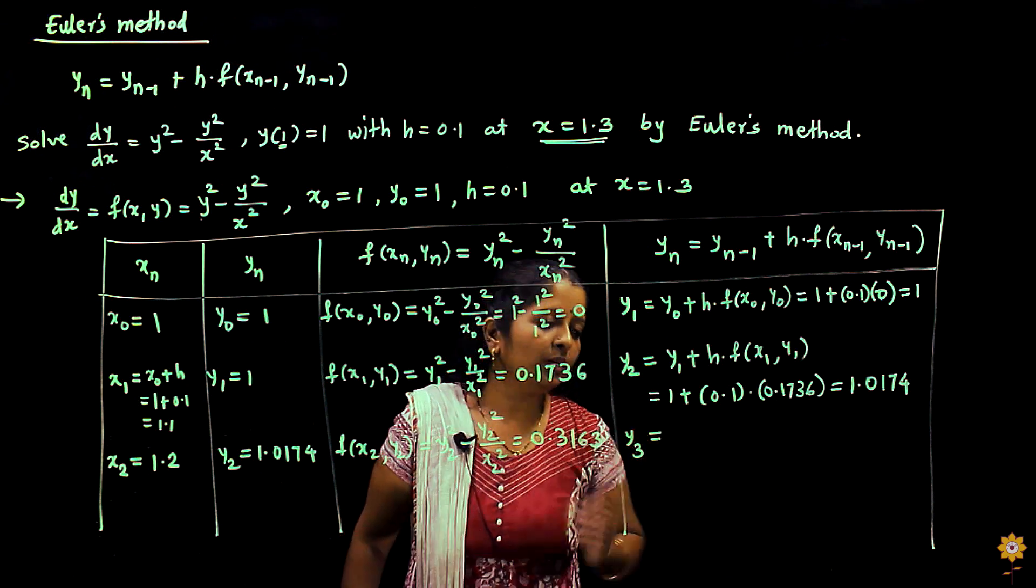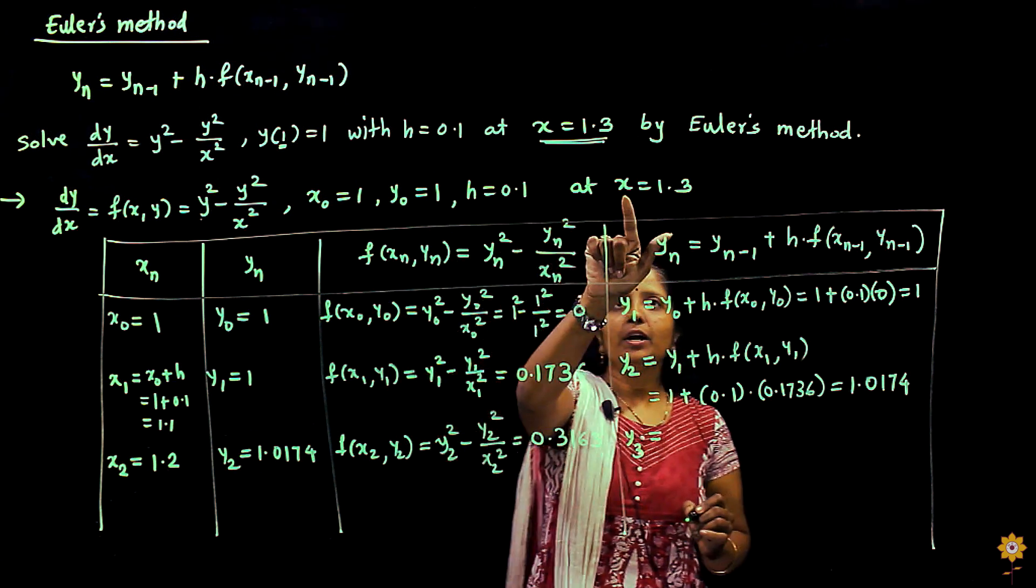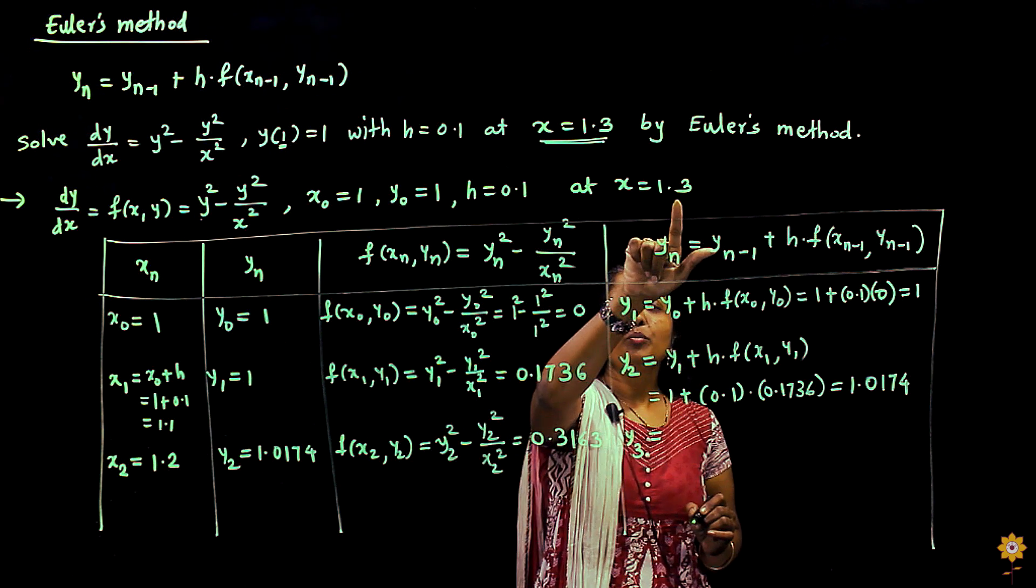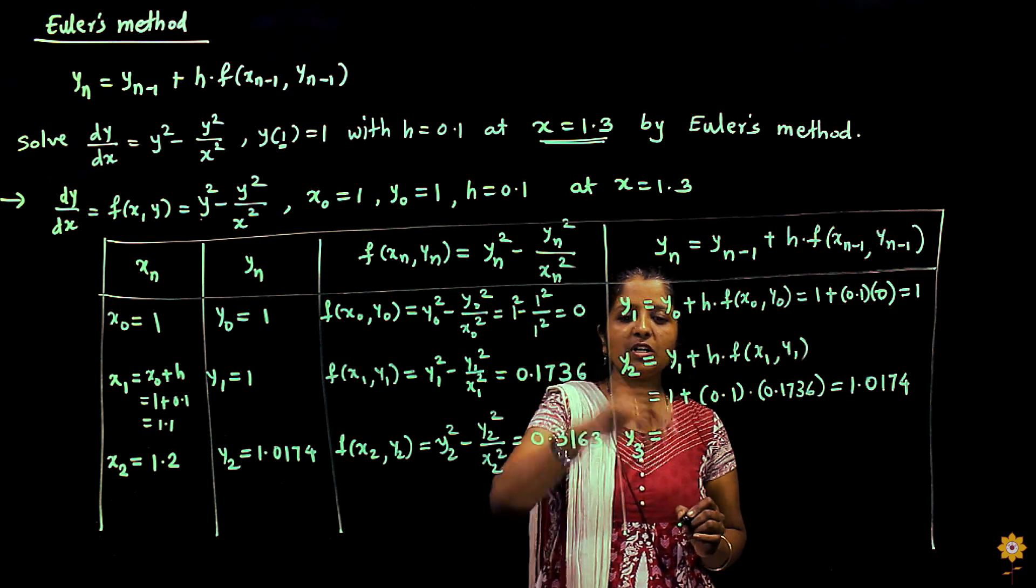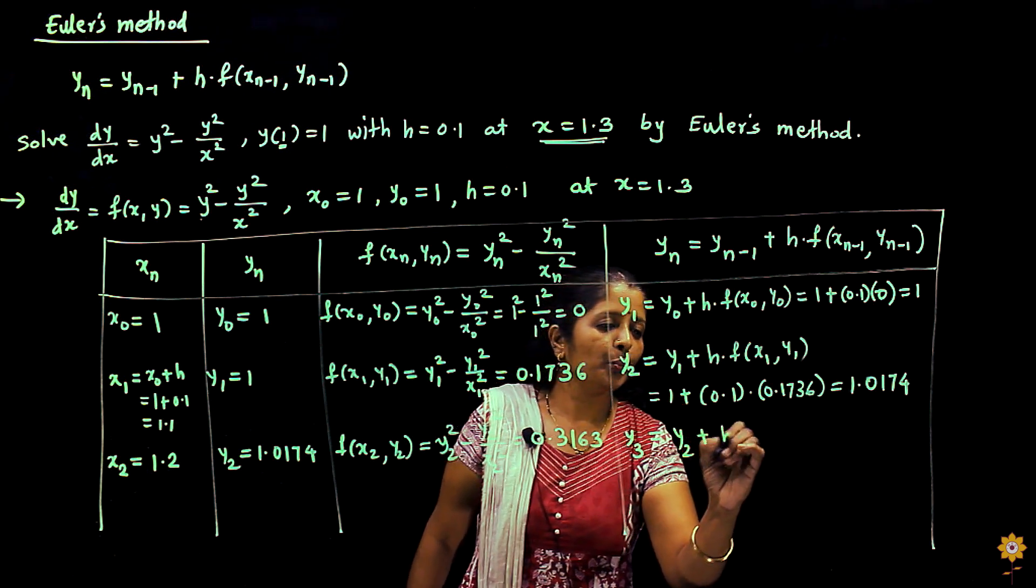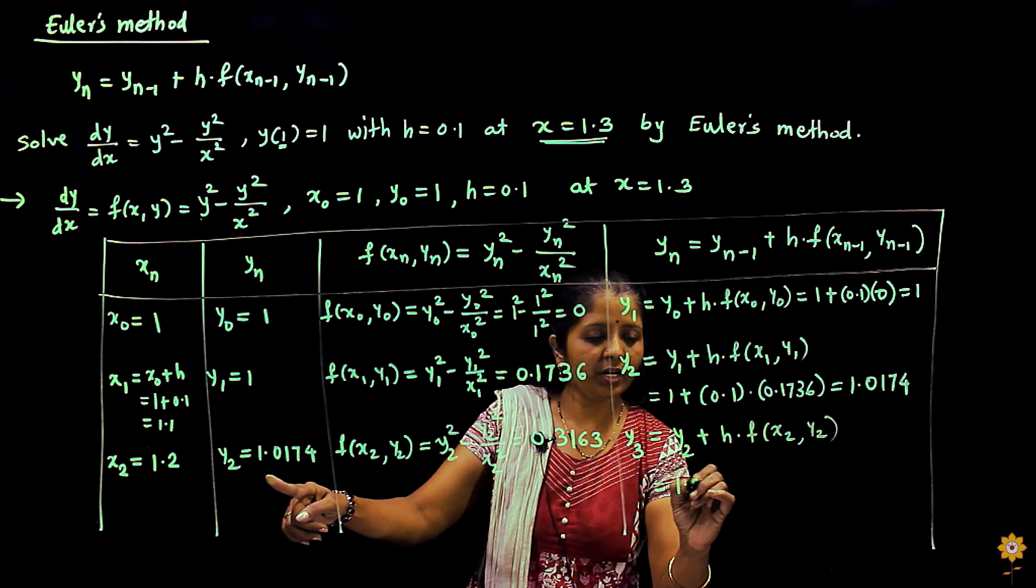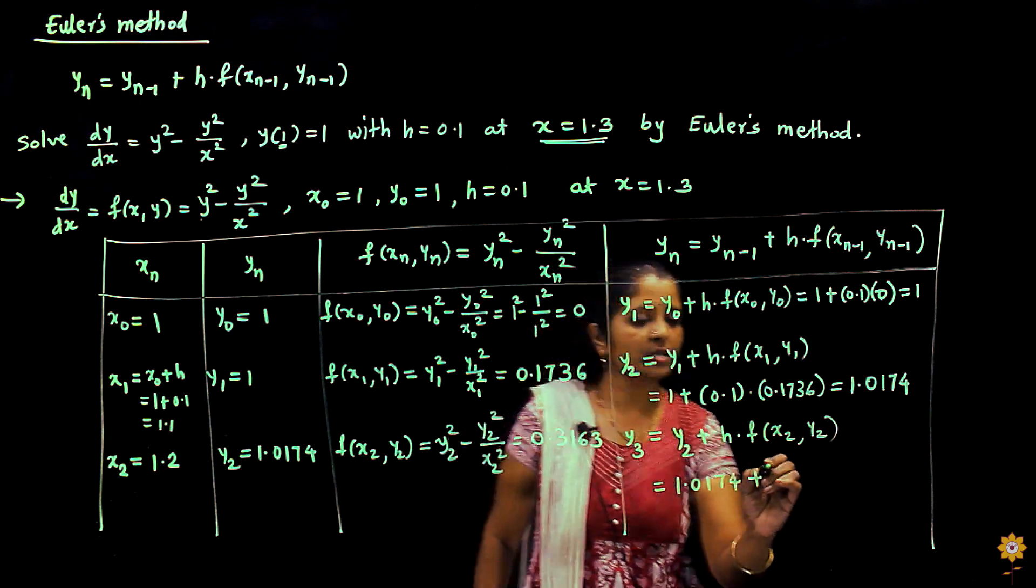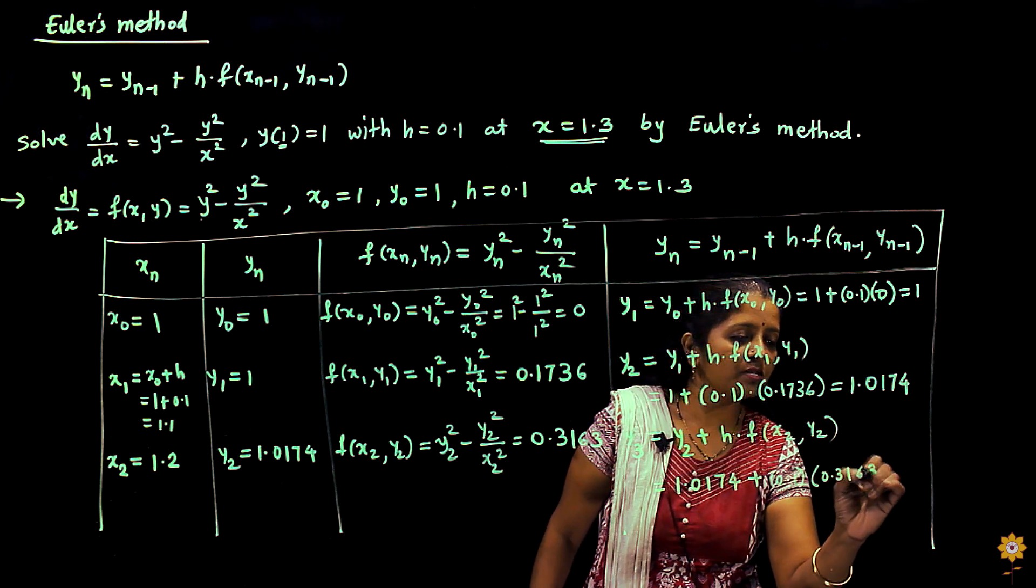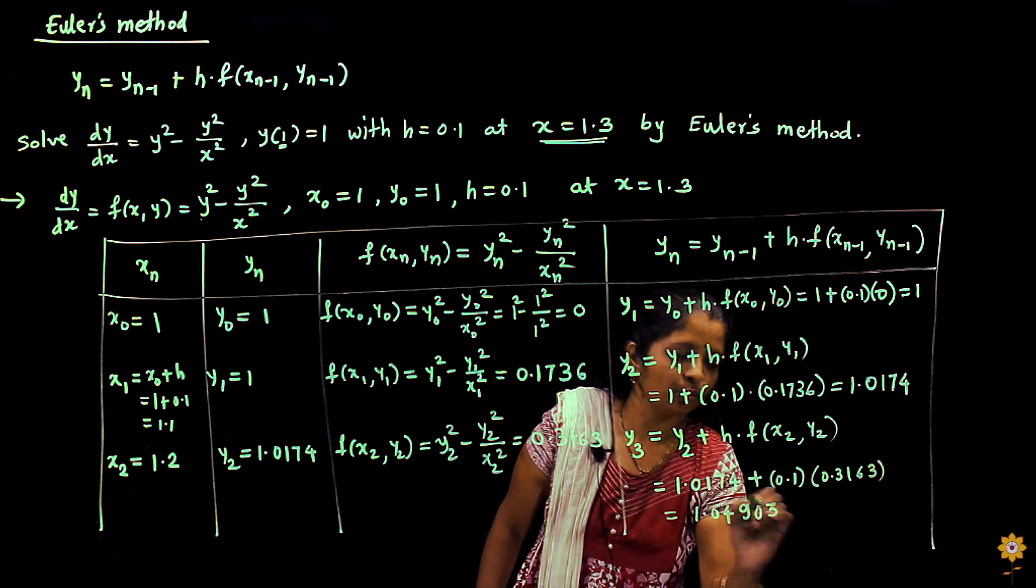Now we will find out y3. As we have discussed, y3 will be the required value because we want to find out at x equal to 1.3. x0 is 1 with step size 0.1, so x = 1.3 will be the value of x3. The corresponding value of y will be y3, which will be the required answer. So y3 = y2 + h·f(x2, y2). Substitute these values: y2 is 1.0174 plus h is 0.1 into f(x2, y2) is 0.3163. If you calculate this, you will get the answer as 1.04903.